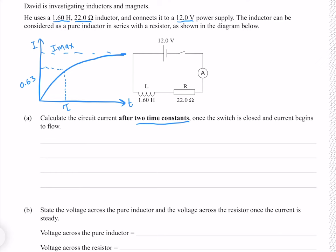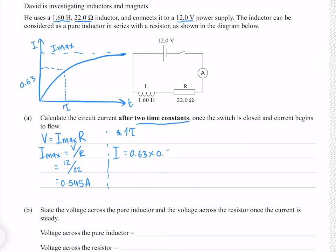Maximum current occurs when the current stops changing and back EMF is zero — essentially just a voltage source and a resistor, so we use Ohm's law: I equals V over R. Putting our numbers in gives 0.545 amps. The current after one time constant is 63% of maximum current, which is 63% of 0.545, giving 0.343 amps.